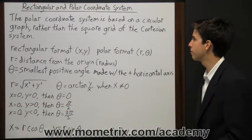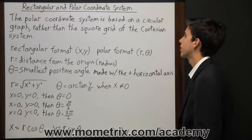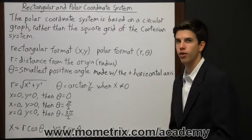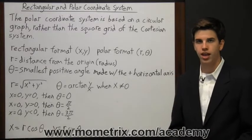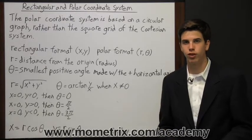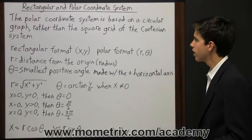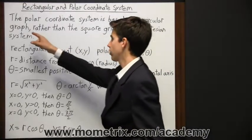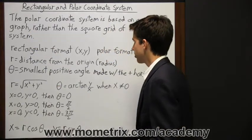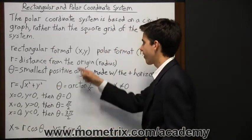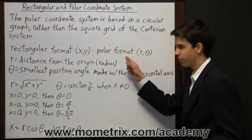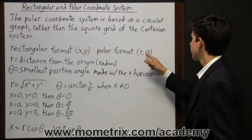The polar coordinate system is based on a circular graph, rather than the square grid of the Cartesian system. You're probably familiar with rectangular coordinates, which lie on the square grids of the Cartesian plane. The polar coordinate system is different because it's based on a circular graph. We write rectangular format like this: x and y. But we write the polar coordinate system in this format: r and then theta.